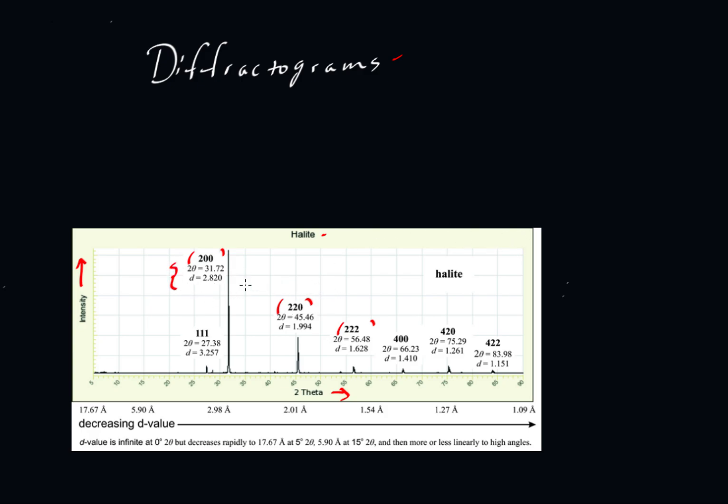For this video, I want to look at these values here. Dexter Perkins is showing the 2 theta value of 31.72. That's read off directly from the diagram, the position of this peak on the horizontal axis. This peak has a 2 theta of 45.46. He shows a d value of 2.820. So where does that come from?